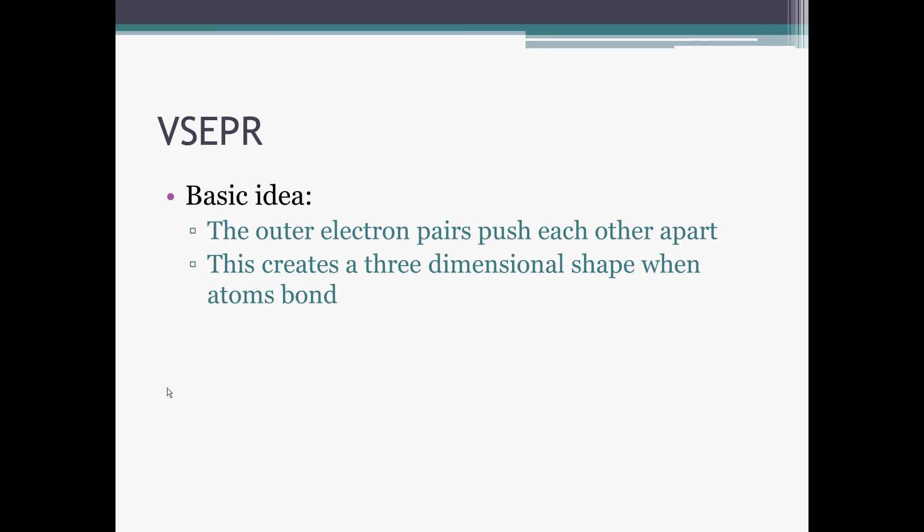Now in three dimensions, since electron pairs, naturally being negatively charged, are going to repel each other, we need to get as much space between these electron pairs as possible. These pairs, bonding and non-bonding, are what we call electron domains. So we look at a single atom in the molecule and look how these electron domains are arranged around it.